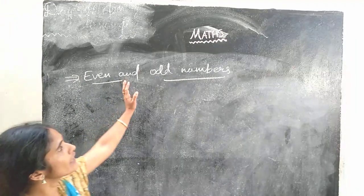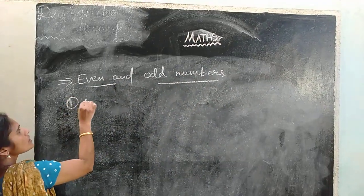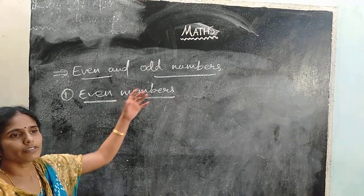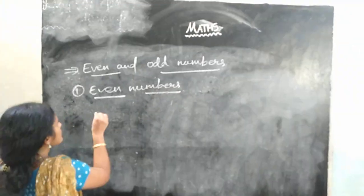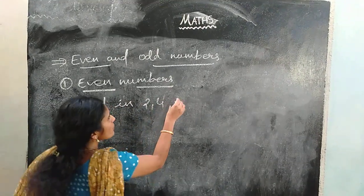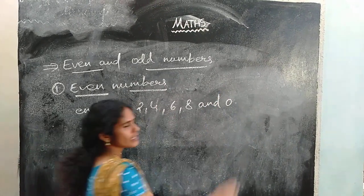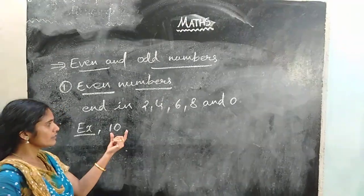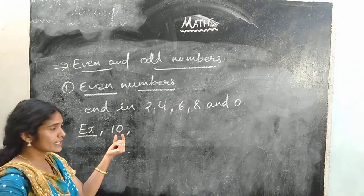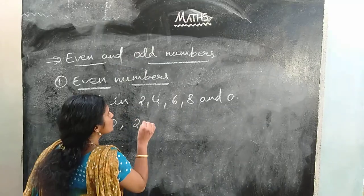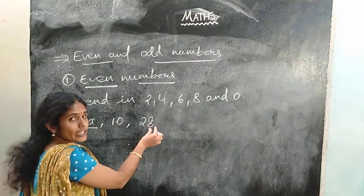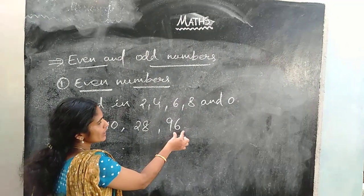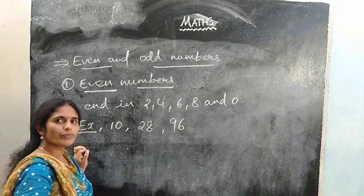The next is even and odd numbers. The first type is even numbers. Even numbers end in 2, 4, 6, 8 or 0. For example, 10 — the last digit is 0, so it is an even number. 28 — this number ends in 8, so 28 is an even number. And 96 — it ends with 6, so 96 is also an even number.